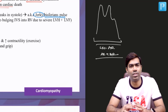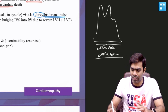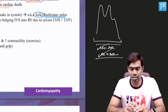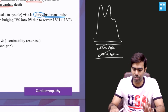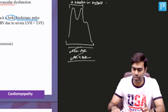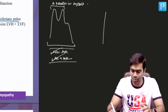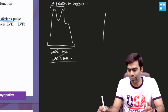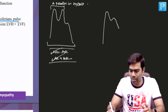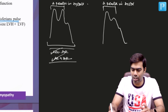Bisferiens pulse is never seen in a patient with severe AS alone. In severe AS you will see an anacrotic pulse or pulsus parvus et tardus. In severe AR, or in combined AS and AR, you see the classic bisferiens pulse with two equal peaks in systole. In HOCM — the obstructive form of HCM — you see a kind of bisferiens pulse, but the two peaks are not equal.